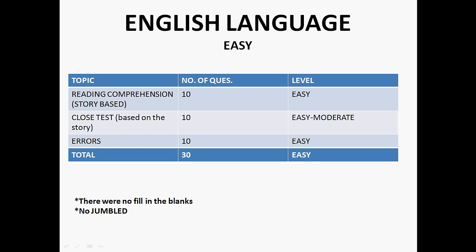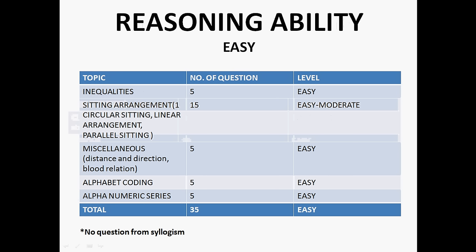Reasoning was also easy. There were 5 questions which were very direct inequalities, of easy level. 15 questions from seating arrangement. There were 3 arrangements in reasoning: one was circular seating arrangement, second was linear arrangement, and third was parallel seating. Total questions were 15 from seating arrangement and level of arrangements were easy to moderate.